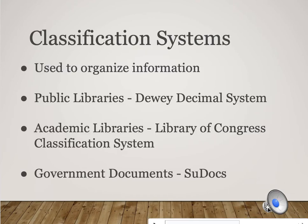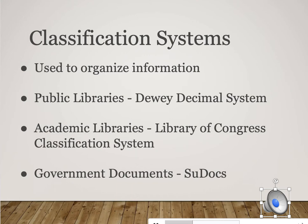There are three major classification systems that libraries and librarians use to organize information. The first is the Dewey Decimal System, which is used primarily by public libraries. This is the system that might be the most familiar to you if you've spent much time in your local public library. It's a relatively simple system. You might go to your public library to pick up a cookbook, a travel guide, or some new fiction.